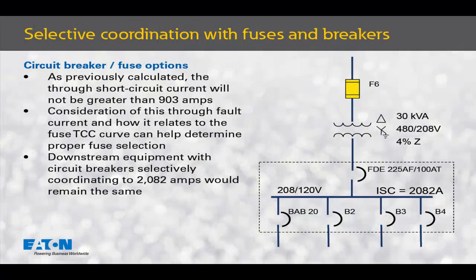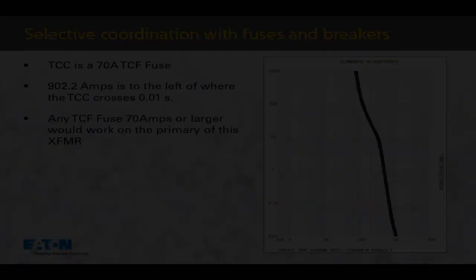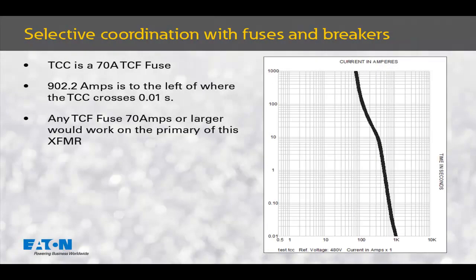Knowing that the primary fuse will see 903 amps during this short circuit event on the secondary, we review the time current characteristic curve for the fuse to determine selectivity with the circuit breakers on the secondary. To achieve selectivity, the TCC must show that the through short circuit current of 903 amps is less than where the fuse curve crosses 0.01 seconds. This is the trip curve for the TCF 70 amp fuse. The 903 amps of primary short circuit current is to the left of where the fuse curve crosses 0.01 seconds, telling us that any TCF fuse 70 amps and greater will work on the primary of this transformer.